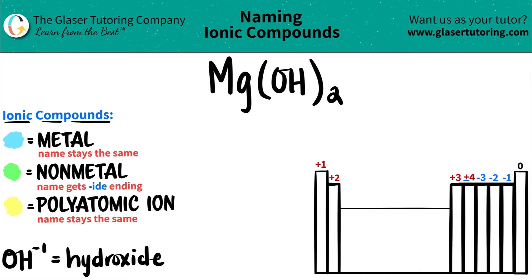In this case we do have three different elements: Mg which is magnesium, O for oxygen, and H for hydrogen. So let's identify the polyatomic ion.